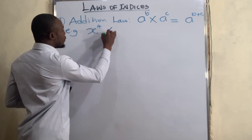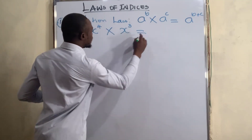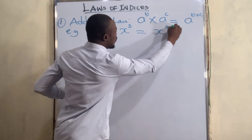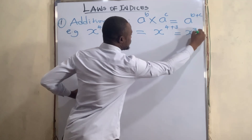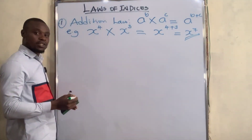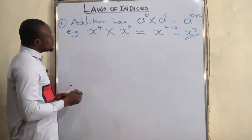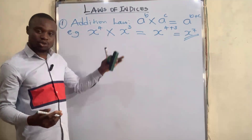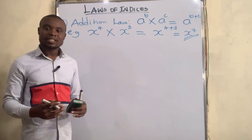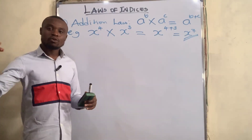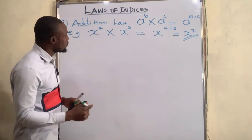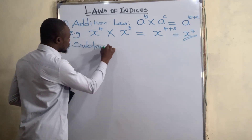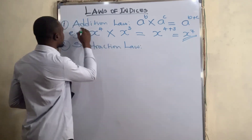For example, x to the power of four multiplied by x to the power of three — we just pick one x and add the powers: four plus three equals seven. So the answer is x to the power of seven. We can verify this by expanding: x to the power of four is x times x times x times x, and x to the power of three is x times x times x — counting all the x's gives seven, confirming x to the power of seven.